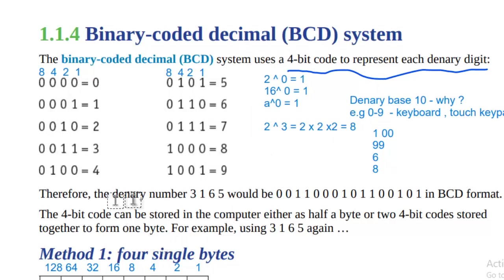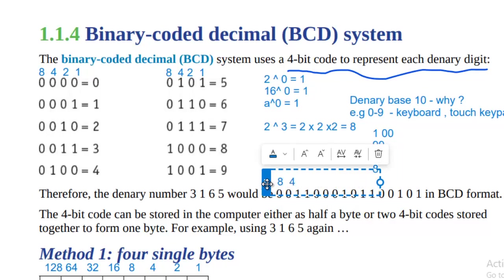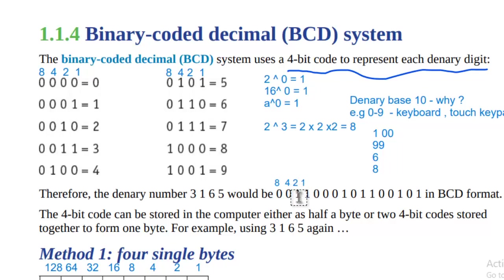The denary number 3165 in BCD format: they have generated the binary of 3 using four bits with weights 8, 4, 2, 1. They inserted a 1 under position 2 and a 1 under position 1, with the rest zero. Two multiplied by 1 equals 2, one multiplied by 1 equals 1, and 2 plus 1 equals 3 — so we get the BCD binary code for denary 3.